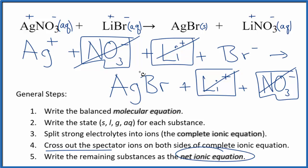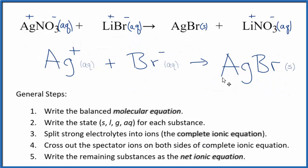This is the balanced net ionic equation for silver nitrate plus lithium bromide. Note that charge is balanced. We have a plus and a minus here, giving us a net charge of zero. This is neutral, so charge is conserved. If you count the atoms up, they're balanced as well.